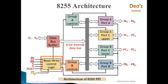The first input to read/write control logic is the CS bar pin — an active low pin. CS stands for chip select. When 0 is sent on this pin, communication between 8255 and the processor is enabled. If this pin is high (1), then processor and 8255 communication is not enabled.